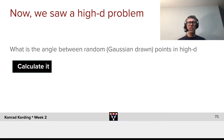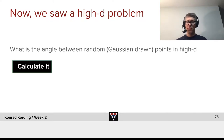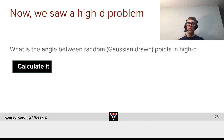So, let's say you draw two points from high-dimensional Gaussian distributions — evenly distributed, where every axis is as important as another one. What's the angle between random points drawn like that?